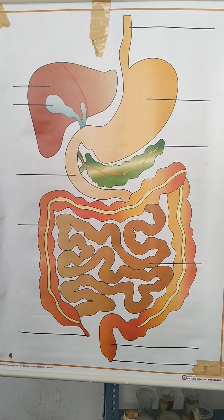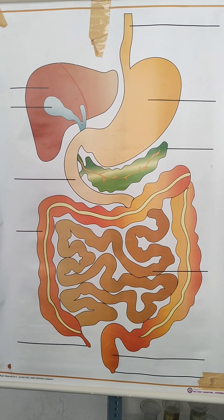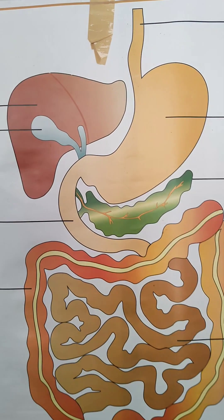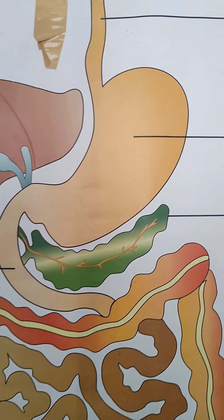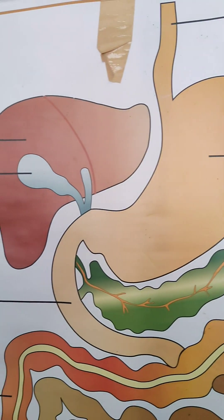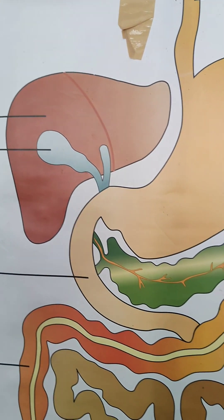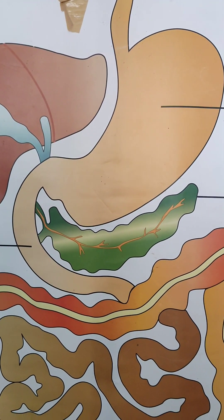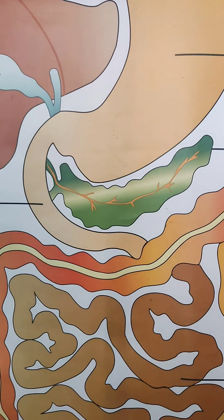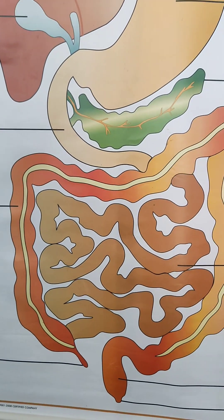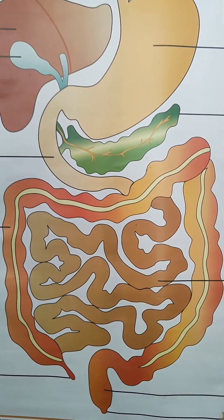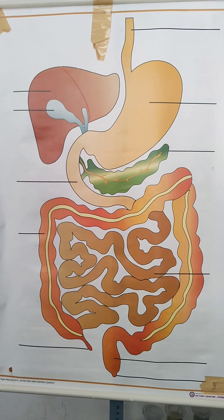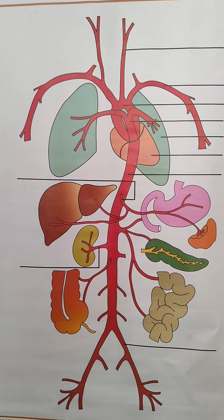Then, the human digestive system. The parts include pancreas, stomach, liver, gallbladder, small intestine, and large intestine. All of these you can identify easily.